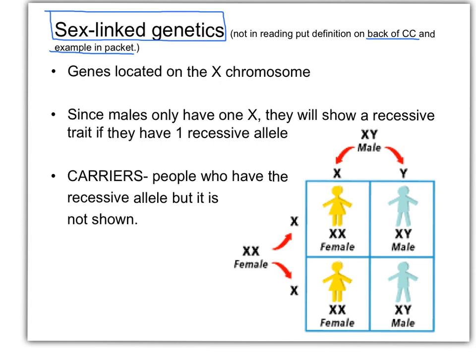It's probably better called gender-linked genetics, but it's called sex-linked genetics. There are two chromosomes involved: the X and the Y chromosome. To be female, you need two X chromosomes. To be male, you need an X and a Y. The Y is the gender-determining chromosome — it actually has a gene that says how to make a male. A male will give half of his offspring his X chromosome and the other half his Y chromosome.